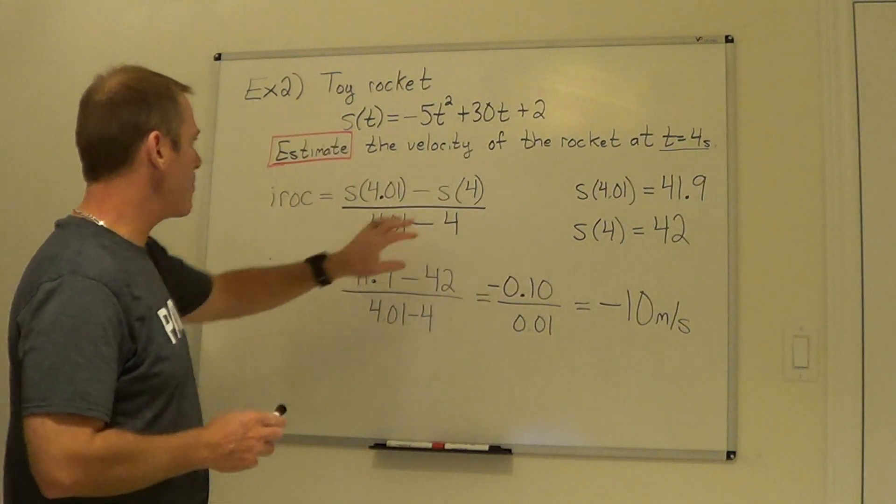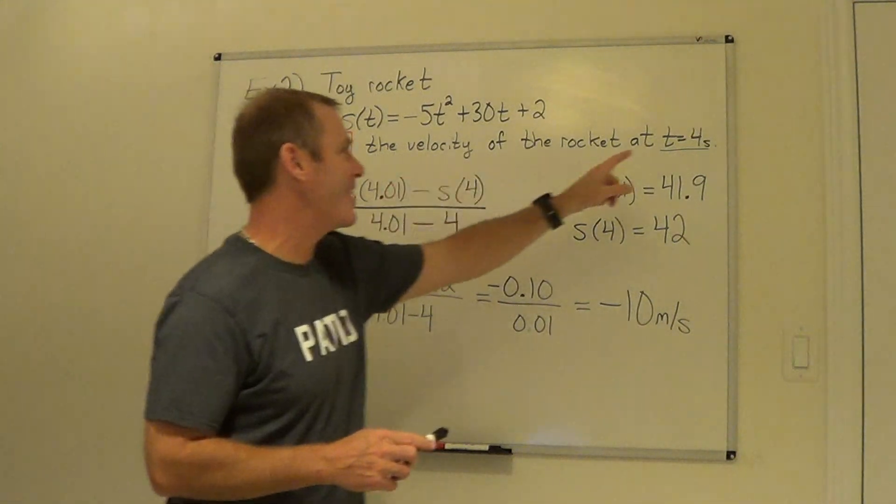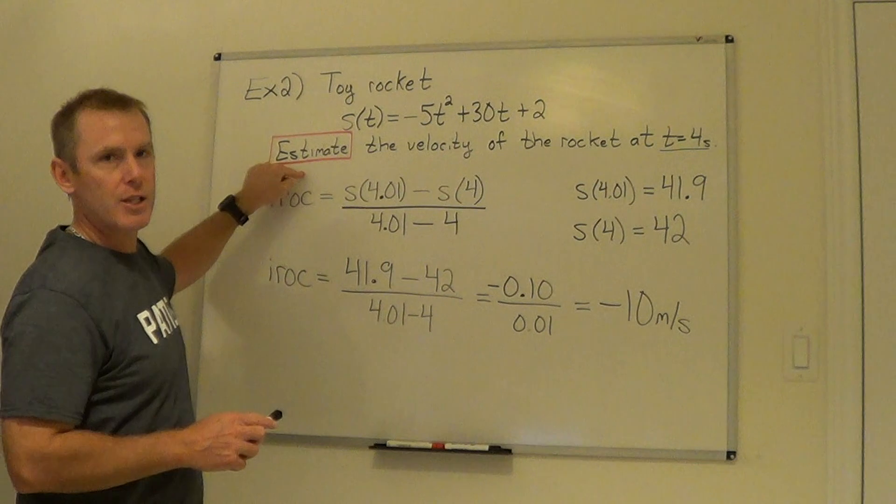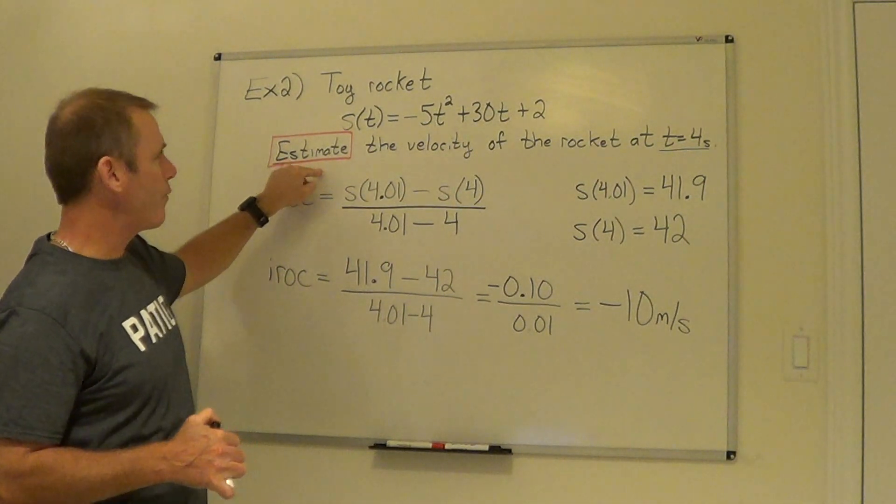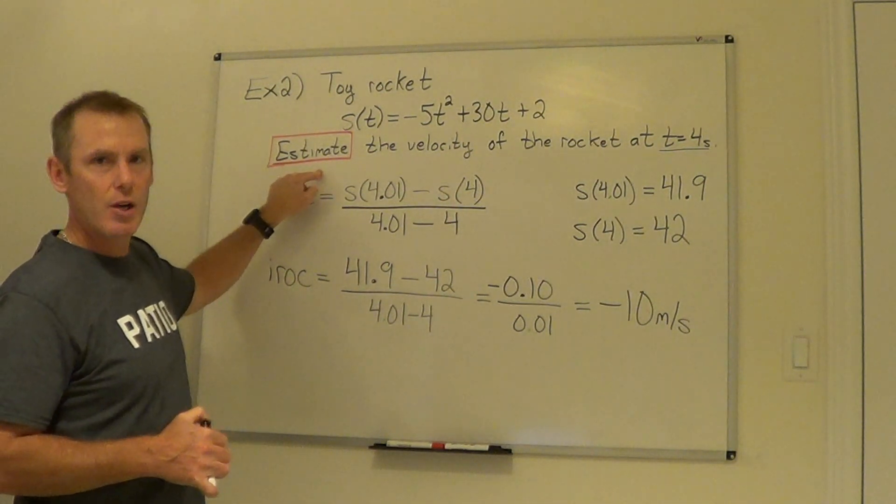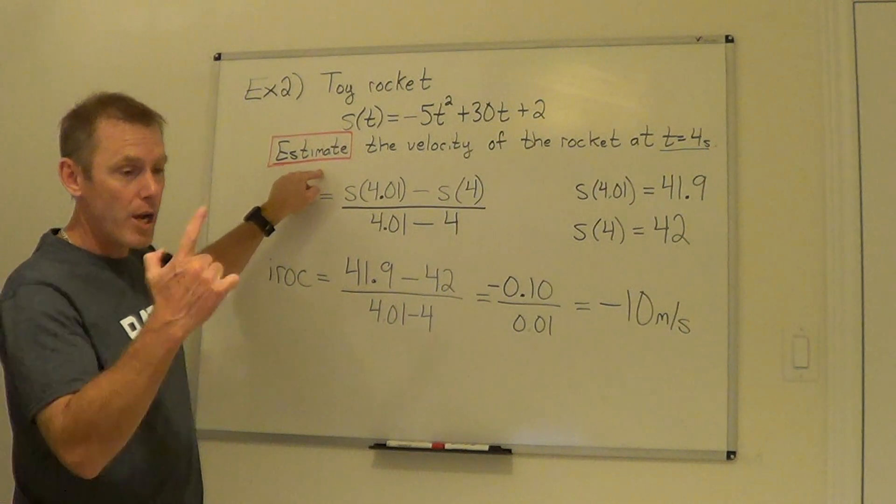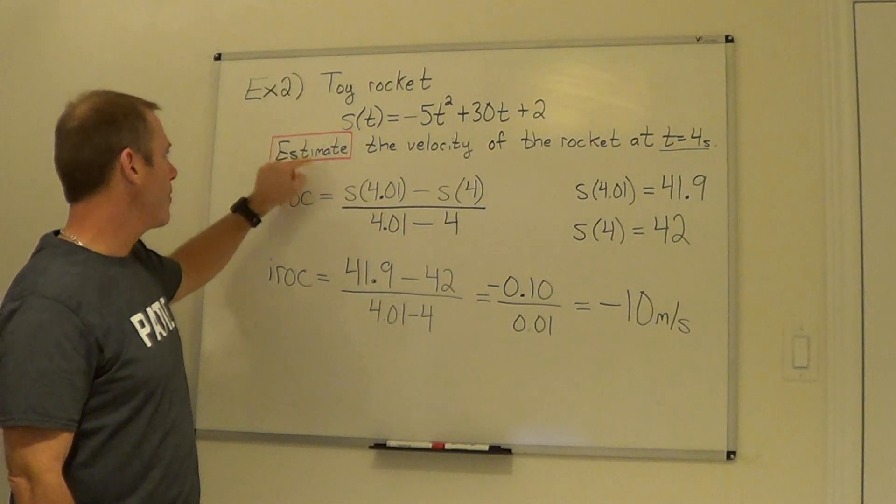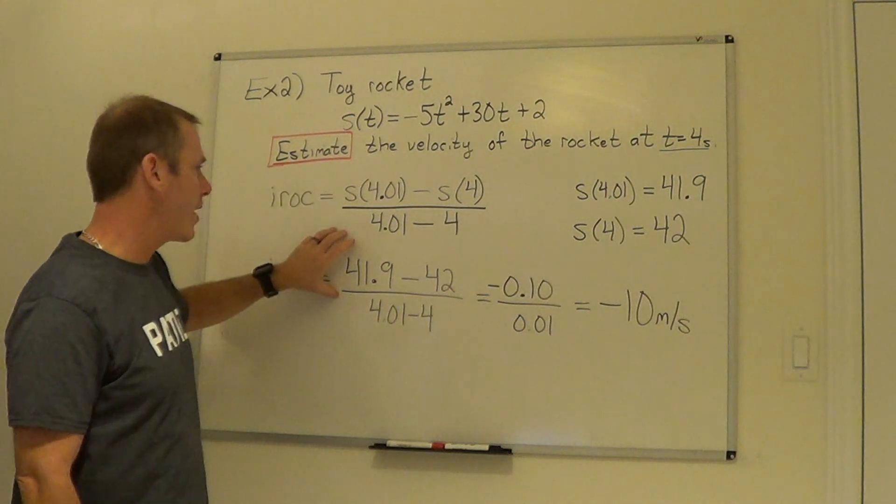So the only time you can use this method to find an instantaneous velocity is if it uses the word estimate. You do this when I ask you for the instantaneous velocity or calculate the velocity and you don't use the limit, you're not going to get any marks for it, but if it says estimate, you can use this way.